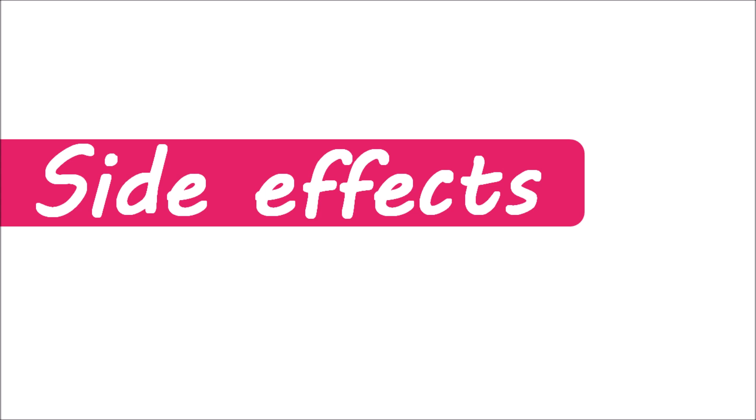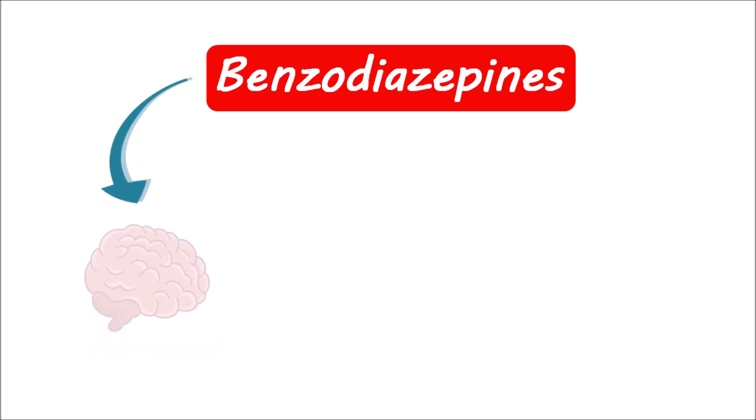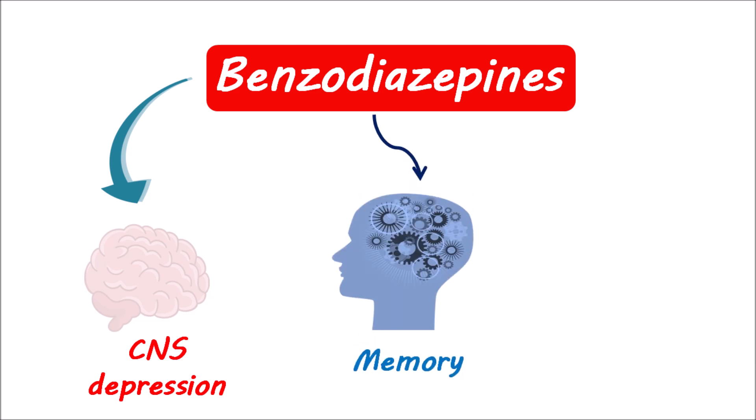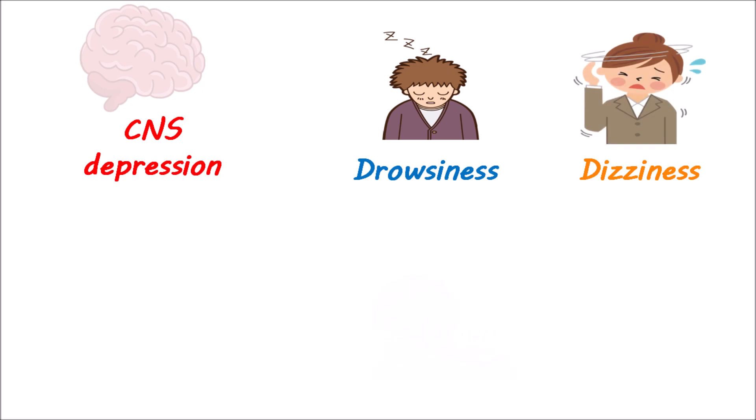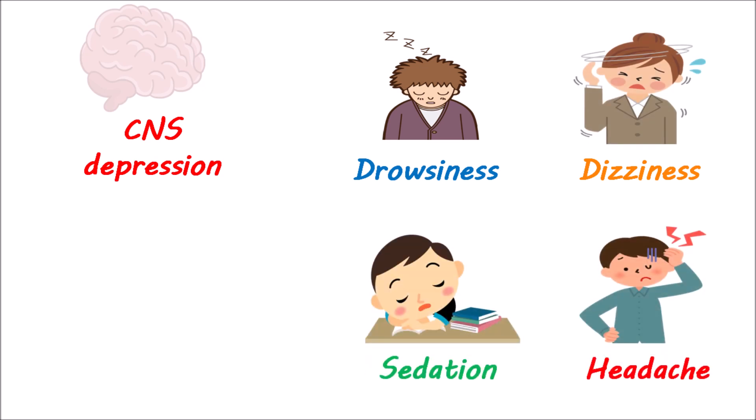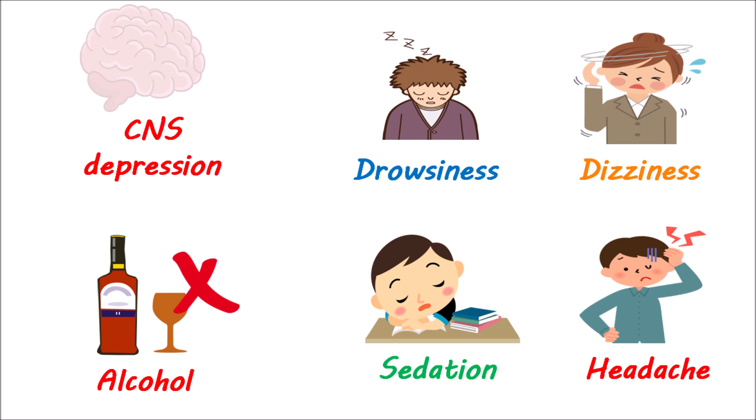Side effects of benzodiazepines: benzodiazepines mainly produce three important effects. They act on the CNS, resulting in CNS depression. They can also impair memory and alter the functions of skeletal muscles, resulting in muscle paralysis. By causing central depression, they can produce drowsiness, dizziness, sedation, and headaches. That's why alcohol should not be combined with benzodiazepines, as alcohol can also depress the CNS. Benzos taken with alcohol may result in severe sedation and coma, hence this combination should be avoided.